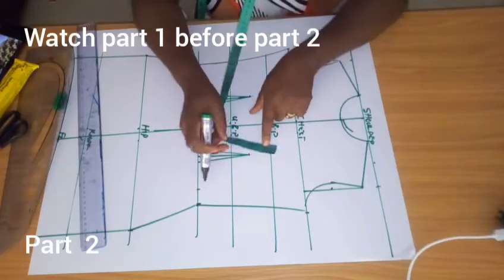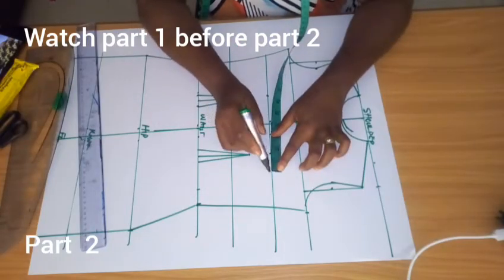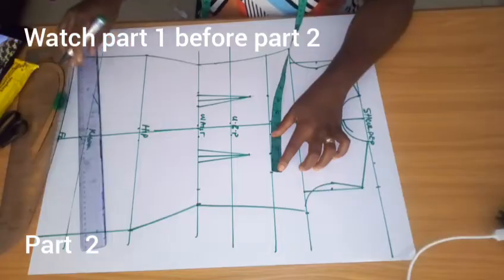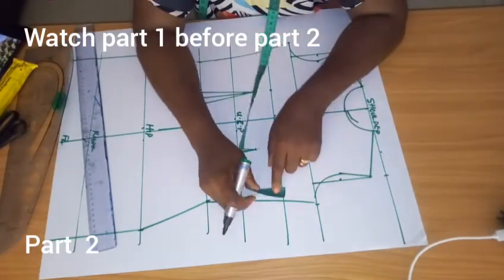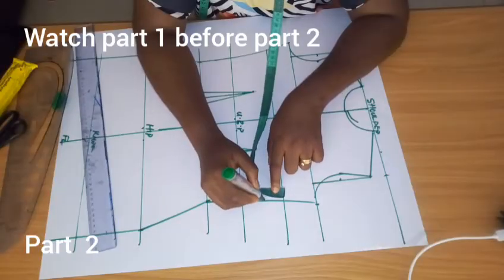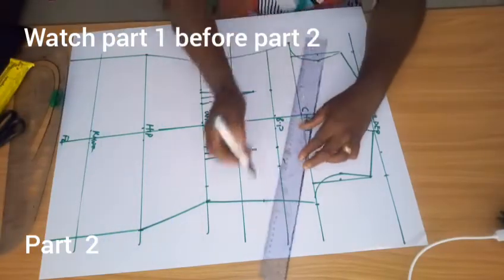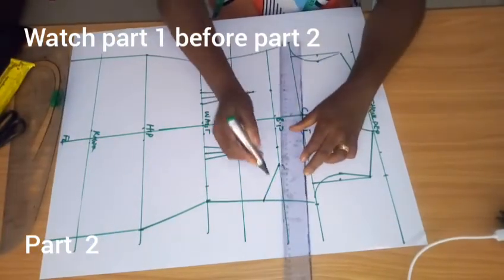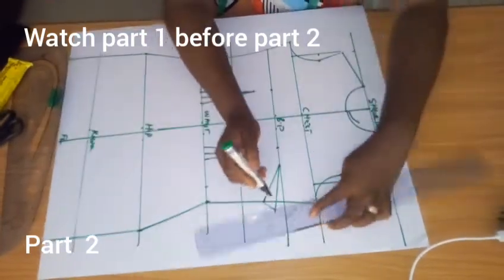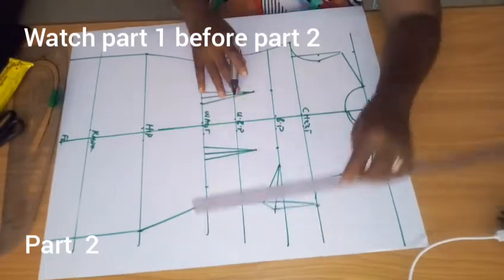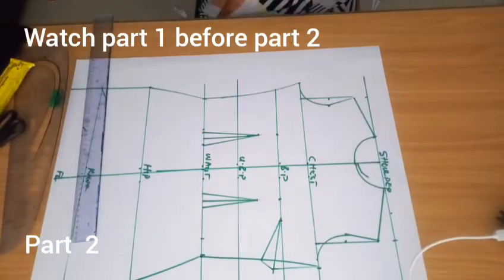So remember, from here to here is 1.5. If you are making an ordinary dress, holding your darts and your waist darts, I'll now input my bust darts. So it has to be the same at this point. This is my bust darts and I'll take it all the way to the chest line.